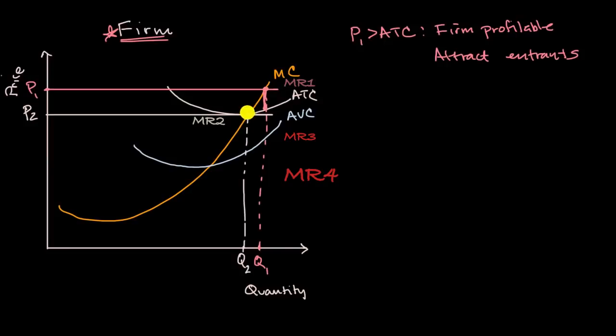Now, in this situation, P sub two is equal to the average total cost, so the firm is breakeven. It's not running at a loss or a profit, so it is breakeven.